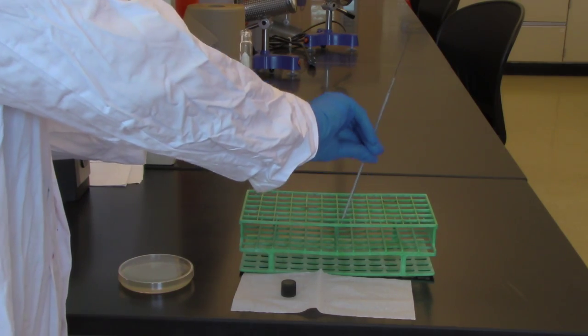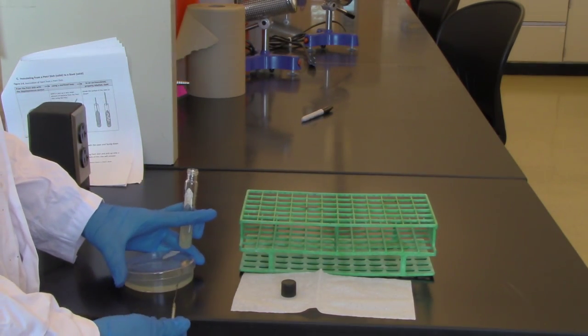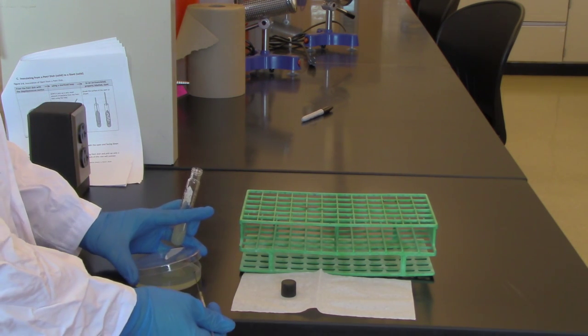Now I'm going to pick up my loop, come over to my petri dish, and do what's called a clamshell. I'll just lift the edge just enough so that I can get the loop in.